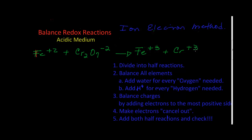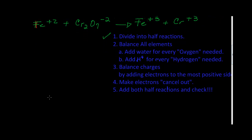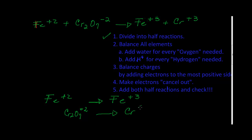We need to make the same number of atoms before and after the arrow. Chromiums, oxygens, hydrogens, and most importantly the charges have to be balanced. We are going to follow five easy steps. The very first one is to divide this net ionic equation into half-reactions. The Fe²⁺ will end as Fe³⁺, and the dichromate ion Cr₂O₇²⁻ will end as Cr³⁺. We are attempting to show the oxidation and the reduction reaction.